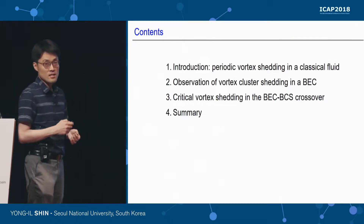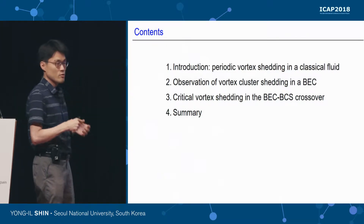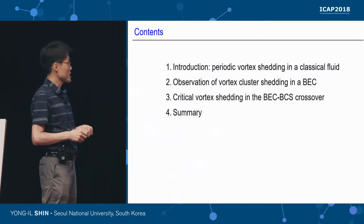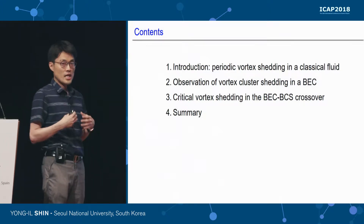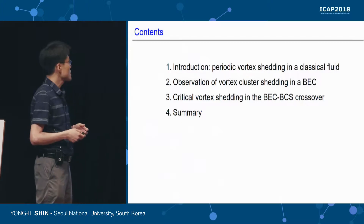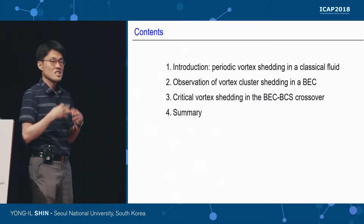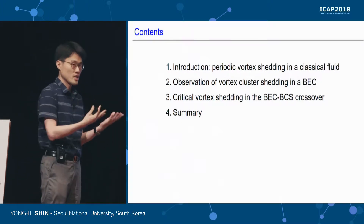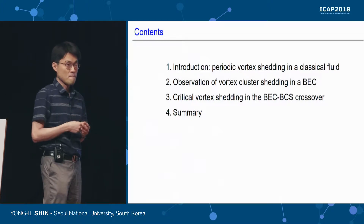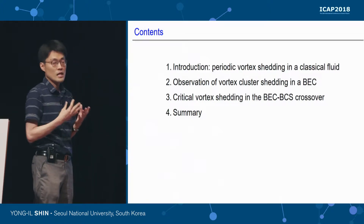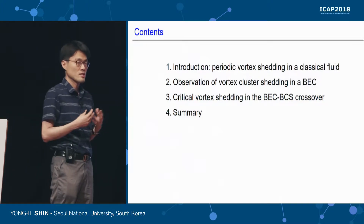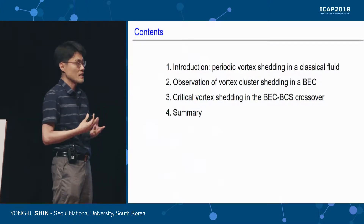This is the outline of the talk. I want to first briefly introduce what we know about vortex shedding in classical fluid. Then I will describe two experiments. In the first experiment, we observed vortex cluster shedding from a moving object in a BEC, which is very closely analogous to what we know about vortex shedding in classical fluid.